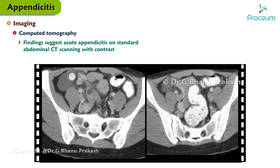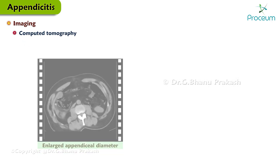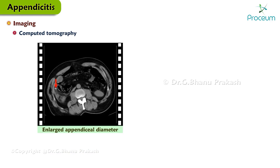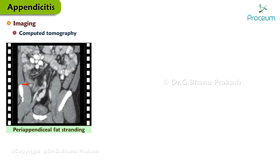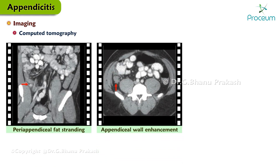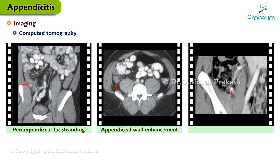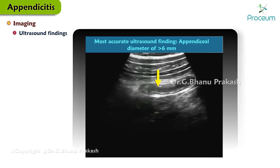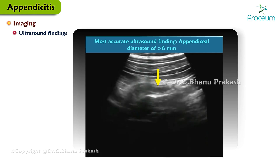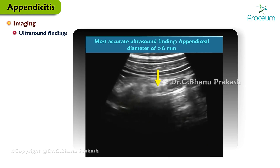On standard abdominal CT scan with contrast, findings of acute appendicitis include enlarged appendiceal diameter greater than 6 mm with an occluded lumen, appendiceal wall thickening of 2 mm or more, peri-appendiceal fat stranding, appendiceal wall enhancement, and an appendicolith seen in approximately 25% of patients. The most accurate ultrasound finding for acute appendicitis is an appendiceal diameter of 6 mm or greater.